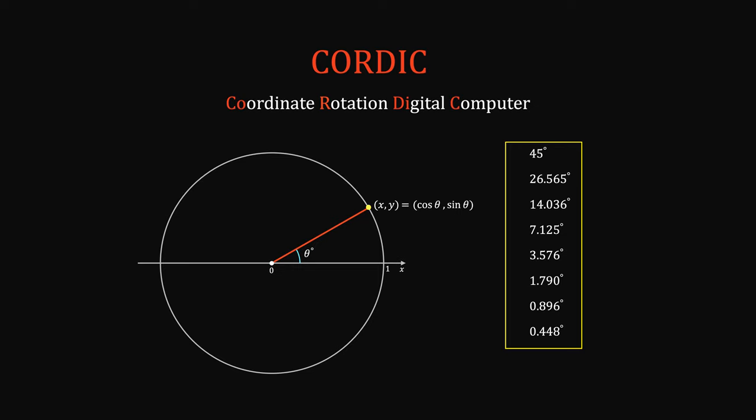For example, if we want to calculate sine 30, which is the y-coordinate of the point, we start from the horizontal line. Rotating by these special angles, note that they can be rotated forward or backward in order to get us close to 30 degrees.